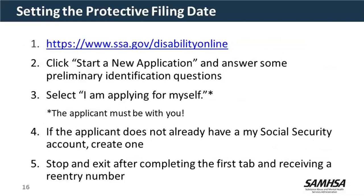Setting the protective filing date: Social Security now requires that you set up a My SSA account for the person in order to do the disability application online. With almost everyone in our population, that's presented a barrier. Many of the people we work with have mental behavioral health issues and are unable to remember many of the questions required to set up a My SSA account — things like the address Social Security has on file for them, where they've lived, what financial institutions they've done business with. There is a workaround: you want to apply as a third party, saying that you're applying for somebody and they're not with you and are unable to sign.